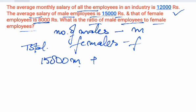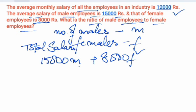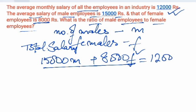Plus the salary which female employees are getting is the average salary of female employees multiplied by the number of female employees. So the total salary of all employees is 15,000M plus 8,000F. This total salary is equal to the average salary of the industry, 12,000, multiplied by the total number of people, M plus F.